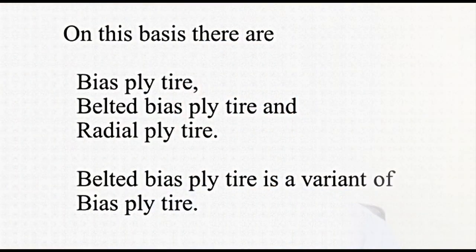Tyres have classification based on their construction. On this basis, there are bias ply tyres, belted bias ply tyres, and radial ply tyres. Belted bias ply tyre is a variant of bias ply tyre.